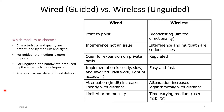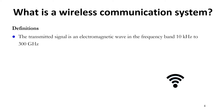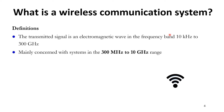Data rate and distance are the key concerns to keep in mind before choosing wired or wireless. Now, what is a wireless communication system? By definition, wireless communication is when the transmitted signal is an electromagnetic wave in the frequency band of 10 kilohertz to 300 gigahertz. We send electromagnetic waves to communicate information within this frequency band.